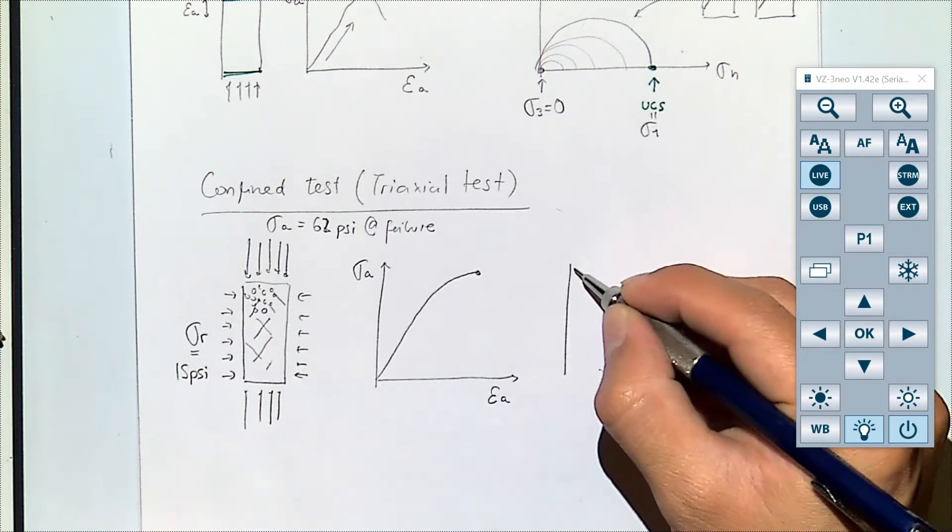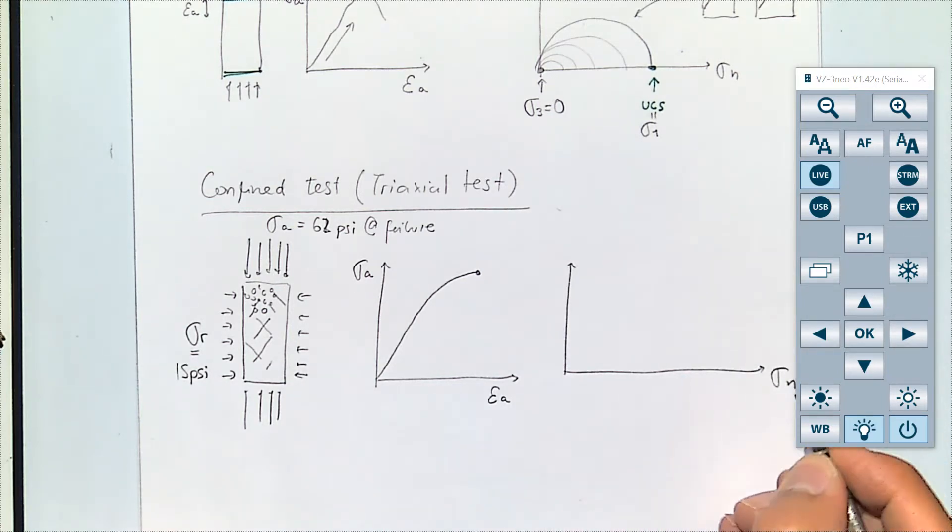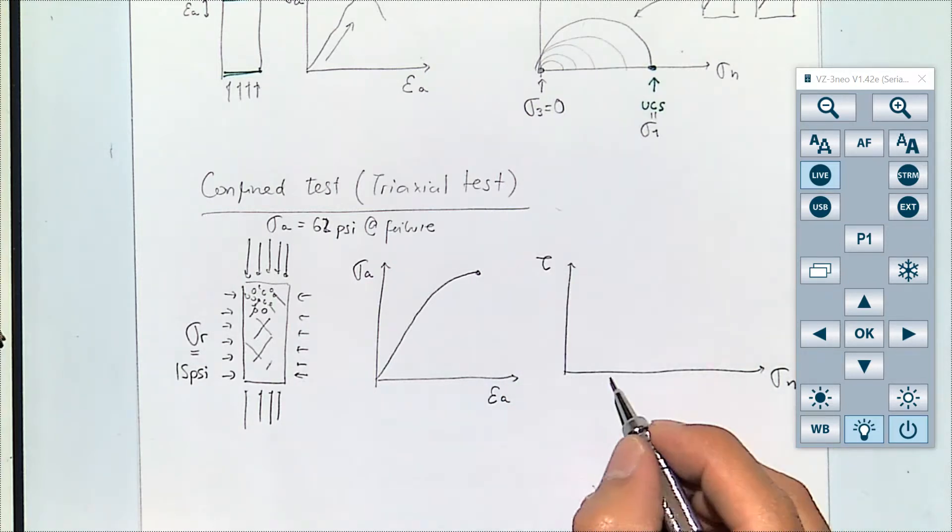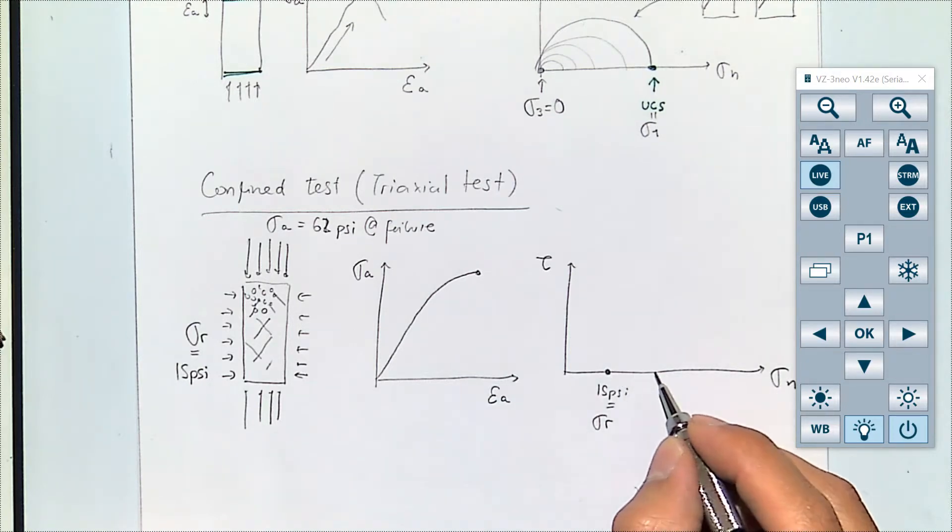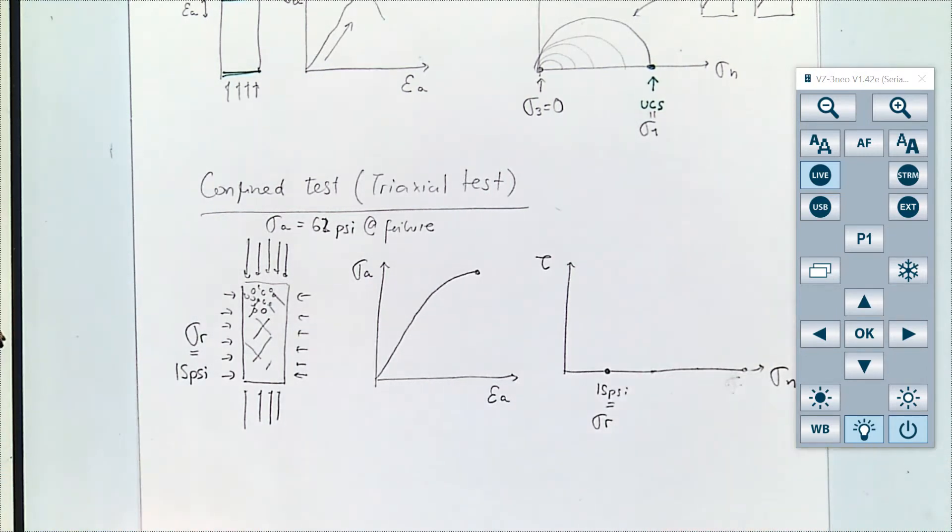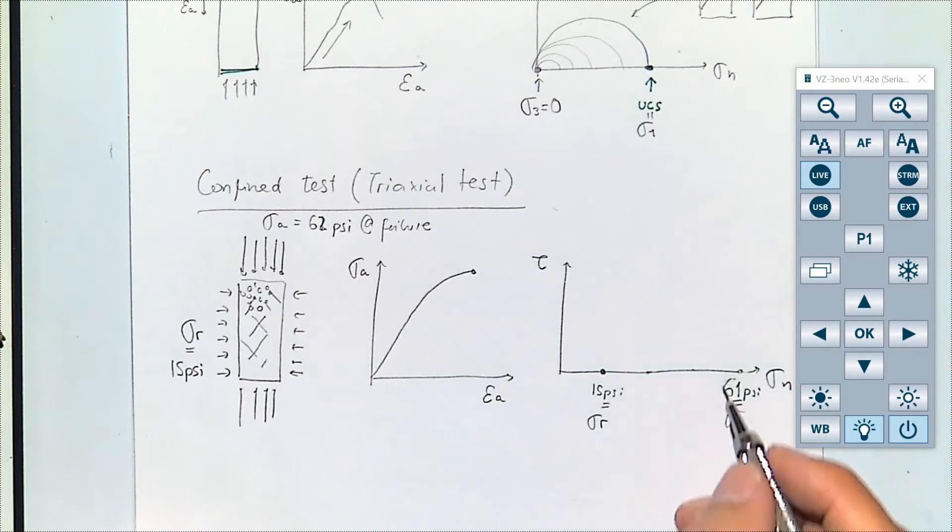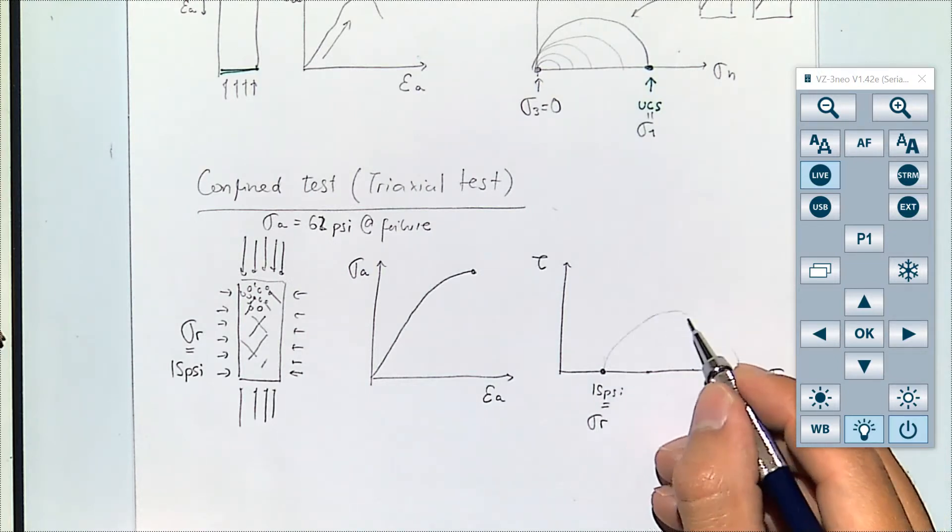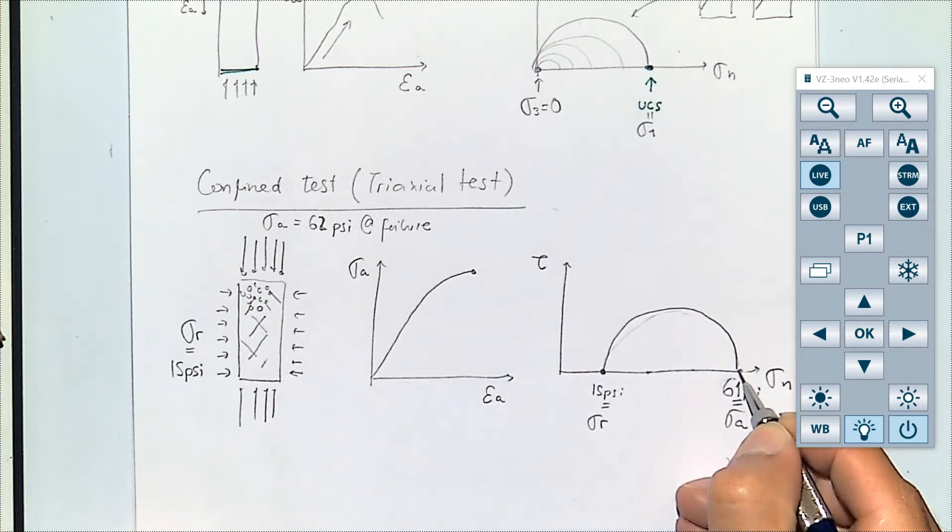Okay so for this case now if I take it to the Mohr circle, now we had a confining stress which was 15 psi and we had a radial stress which was 62, so let's say this is 15, this should be 30, 45, 60, 61 psi. Almost four times. And if I draw the Mohr circle for that then it will have a center somewhere over here and it will be a Mohr circle like this.